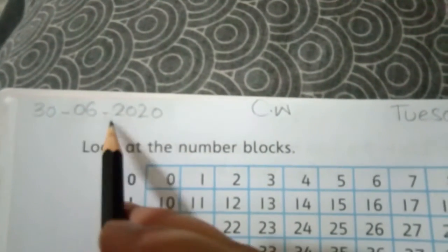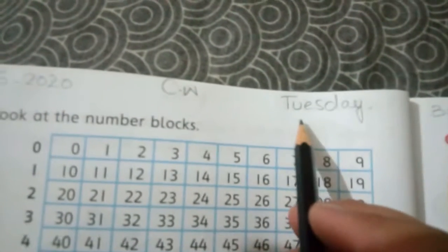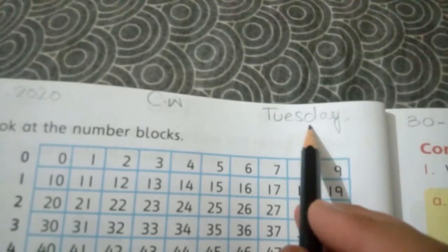What is the page number? 40. Now what you have to do: you have to write the date, that is 30-06-2020. Classwork you will write in the middle, and the day is Tuesday. You will write this day on the top right side: T-U-E-S-D-A-Y, Tuesday.